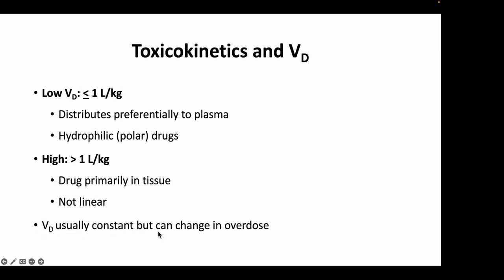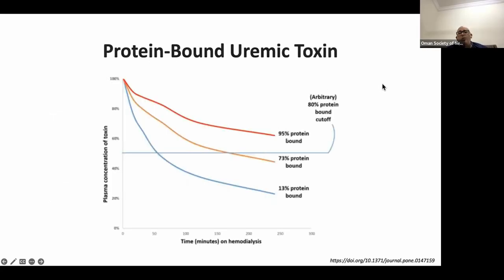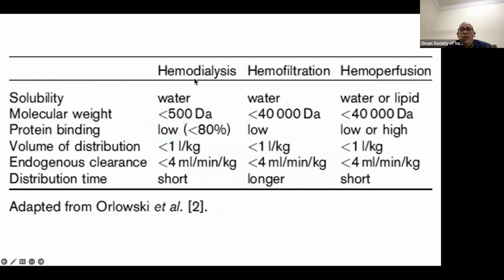Regarding protein binding: the lesser the protein binding of a toxin, the better its removal by dialysis and the greater the decrease in plasma concentration after dialysis. Conversely, the higher the protein binding, the less it is removed by dialysis. Comparing techniques: hemodialysis with cellulose membrane clears up to 500 Da; with bipolar cellulose and synthetic material up to 2,000 Da; hemofiltration can reach up to 40,000 Da for water-soluble molecules only. Hemoperfusion uniquely can remove lipid-soluble and highly protein-bound molecules.